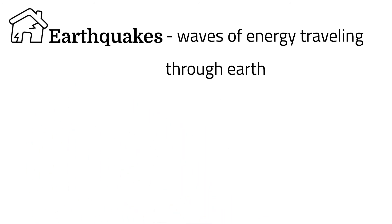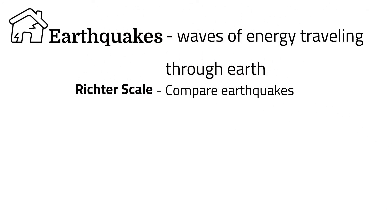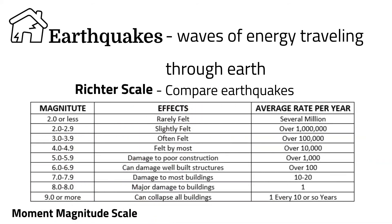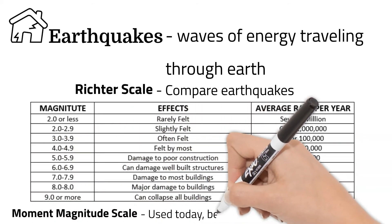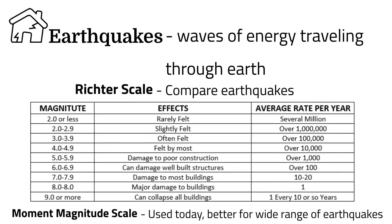To compare earthquakes, seismologists use the Richter scale, which measures earthquakes on a scale from 1 to 10. The energy released from one level to the next is 10 times greater. Today, the moment magnitude scale is mostly used, as it works better over a wide range of earthquakes.